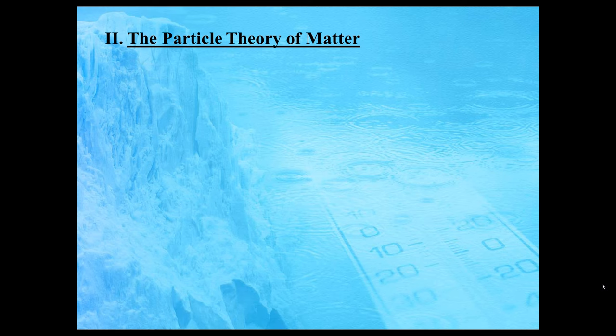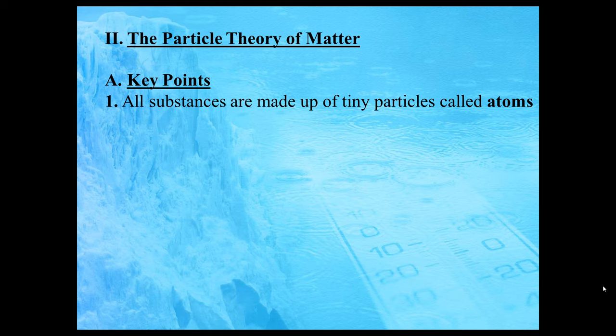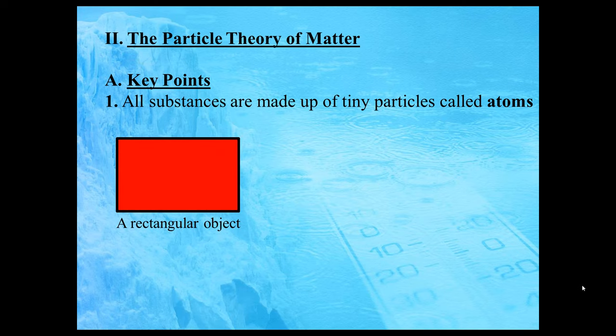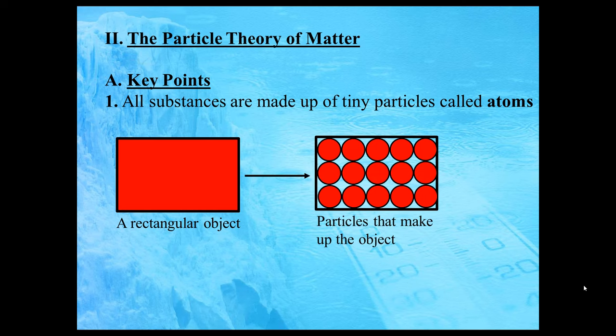Let's start off with the particle theory of matter and we're going to examine three key points. The first key point tells me that all substances are made up of tiny particles called atoms. For example, let's take a rectangular object — a solid brick. The particle theory tells me that this solid brick is actually made up of a bunch of little tiny particles called atoms. We can model the atoms visually by drawing little tiny circles.